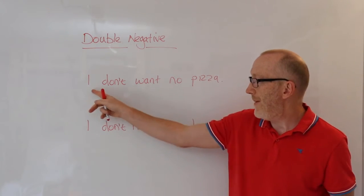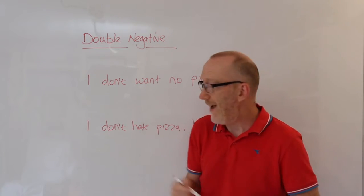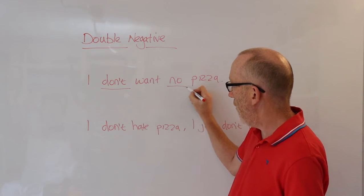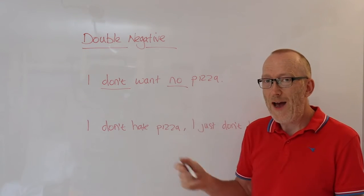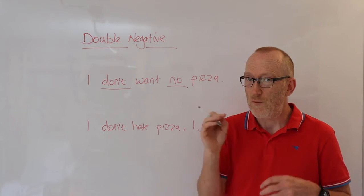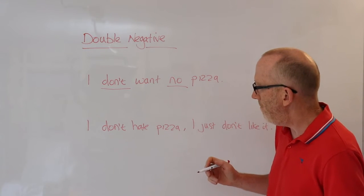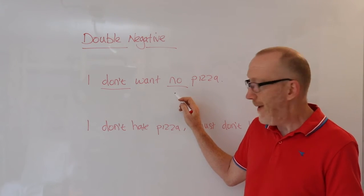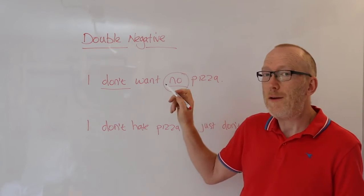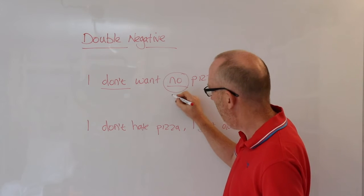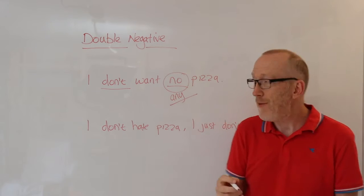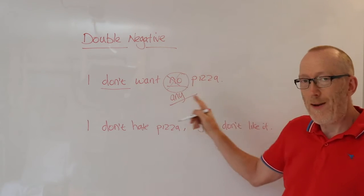Now in English, this is grammatically incorrect because we have a double negative. I don't, I do not want no pizza. So we have a negative and a negative. And in this case, the double negative is just grammatically wrong. What should this word be? I don't want no pizza. What should this word be here? I don't want any pizza. Now that is grammatically correct.